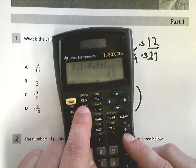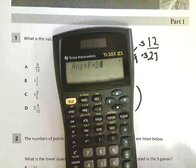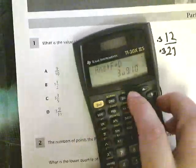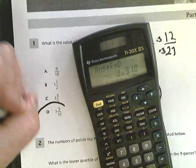So hit second, so you can get up to that menu. Hit the fraction decimal button. It should show this. And then it gives your answer. 3 U 9/10 means 3 and 9/10, which is D.